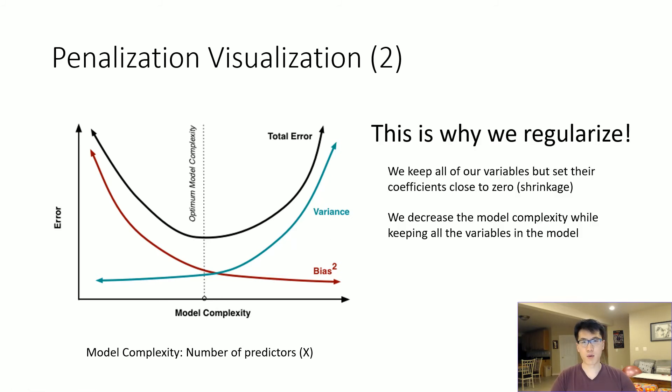This is why we want to regularize. We keep all our variables but set their coefficients to zero or close to zero. We have the entire model structure, but certain features become moot. We also decrease model complexity while keeping all variables in the model.